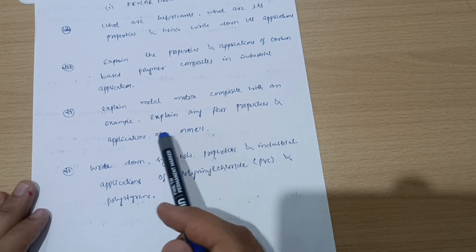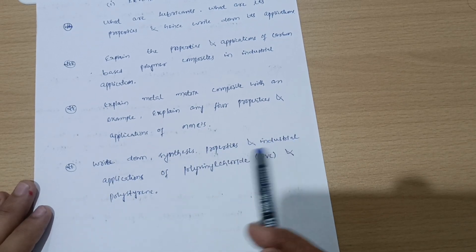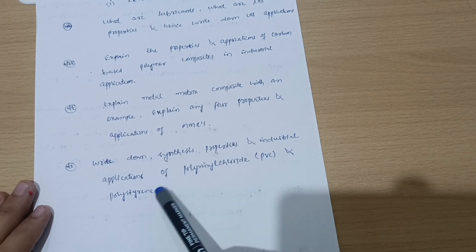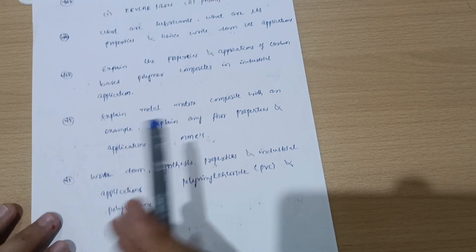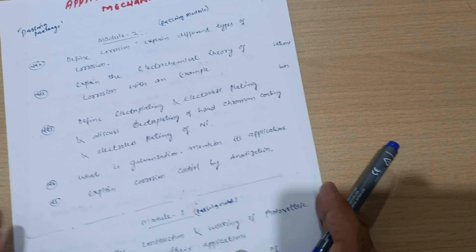Explain metal matrix composites with an example. Explain any four properties and applications of MMCs, metal matrix composites. Write down synthesis, properties, and industrial applications of polyvinyl chloride PVC and polystyrene.